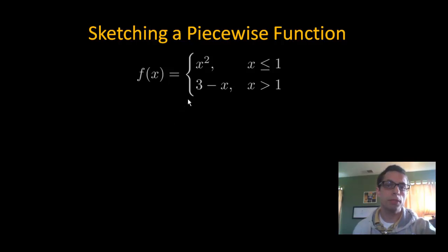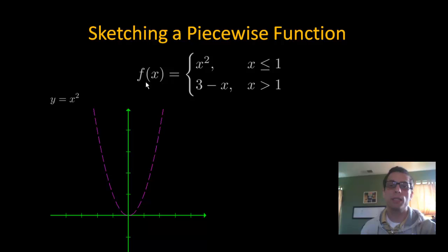Now probably the most important thing about graphing piecewise functions is knowing how to graph each individual piece on their own. So do we know how to graph x squared? So here's the graph of x squared over the entire number line.